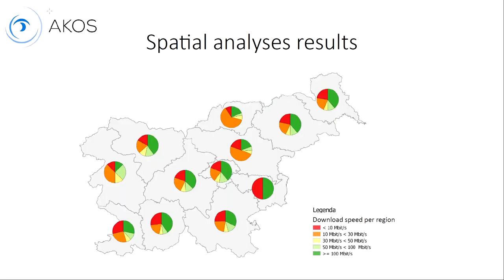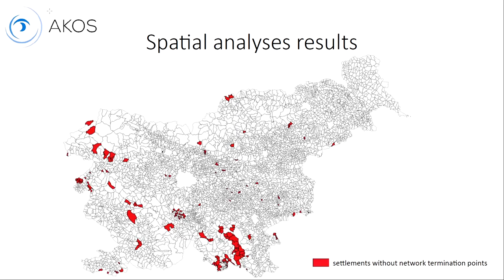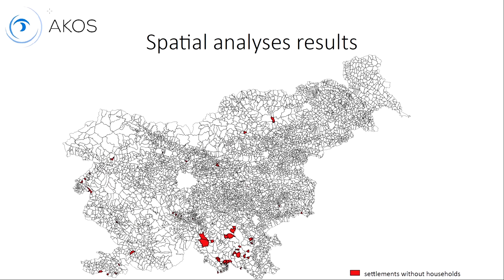The next result is download speed data — this picture shows the download speeds in Slovenia across different regions. The next one shows settlements without any network termination point at all, where people live but don't use internet connection. Different again are settlements where no one lives permanently — just temporary settlements — and we can derive that from our data.